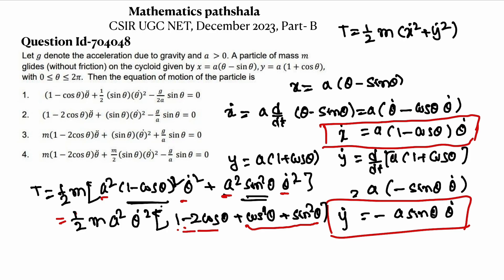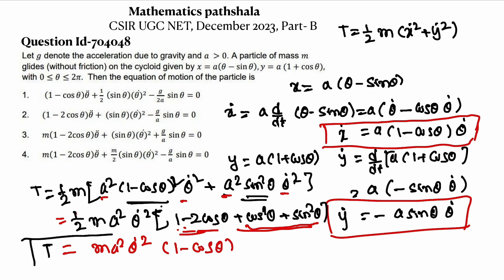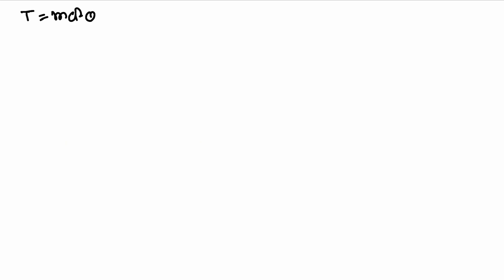Taking the factor of 2 out and cancelling with the ½, we get T = ma²θ̇²(1 - cosθ).